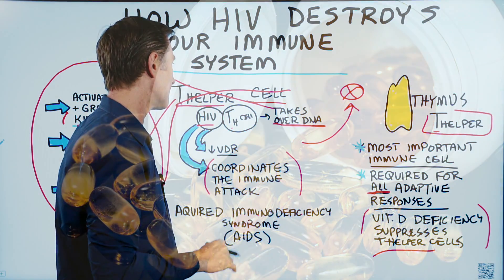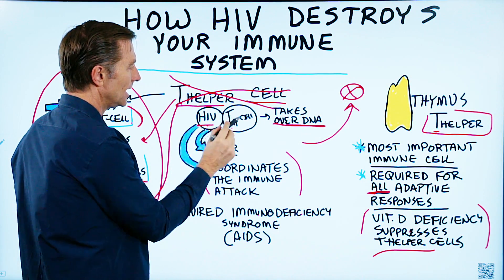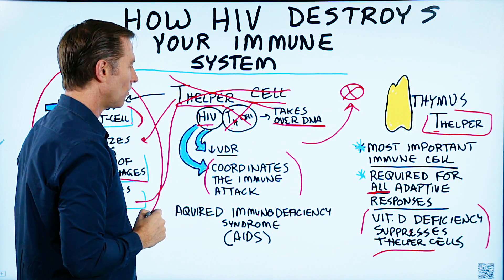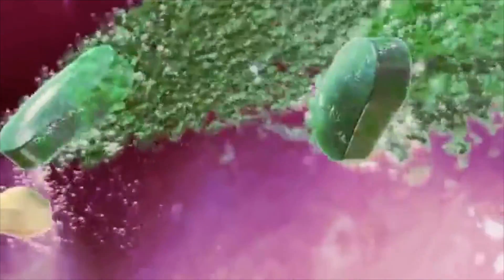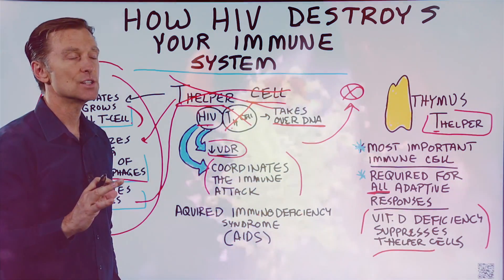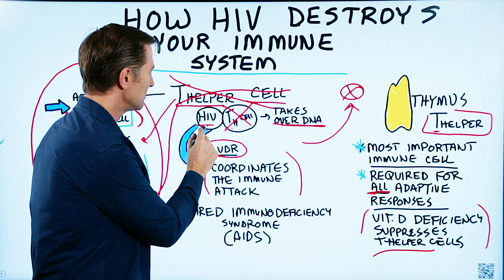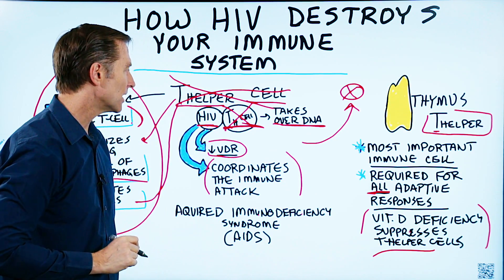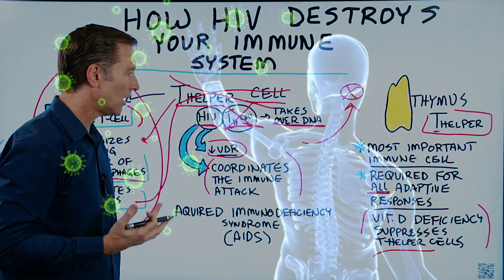The other interesting thing I want to mention is that the HIV virus not only takes out the T helper cell, but it also blocks your vitamin D receptors, limiting your ability to absorb vitamin D. Vitamin D is crucial in immune function. So apparently, this virus is very sneaky — it knocks out not only the main controller, but the main nutrient your body needs to keep the immune system healthy.